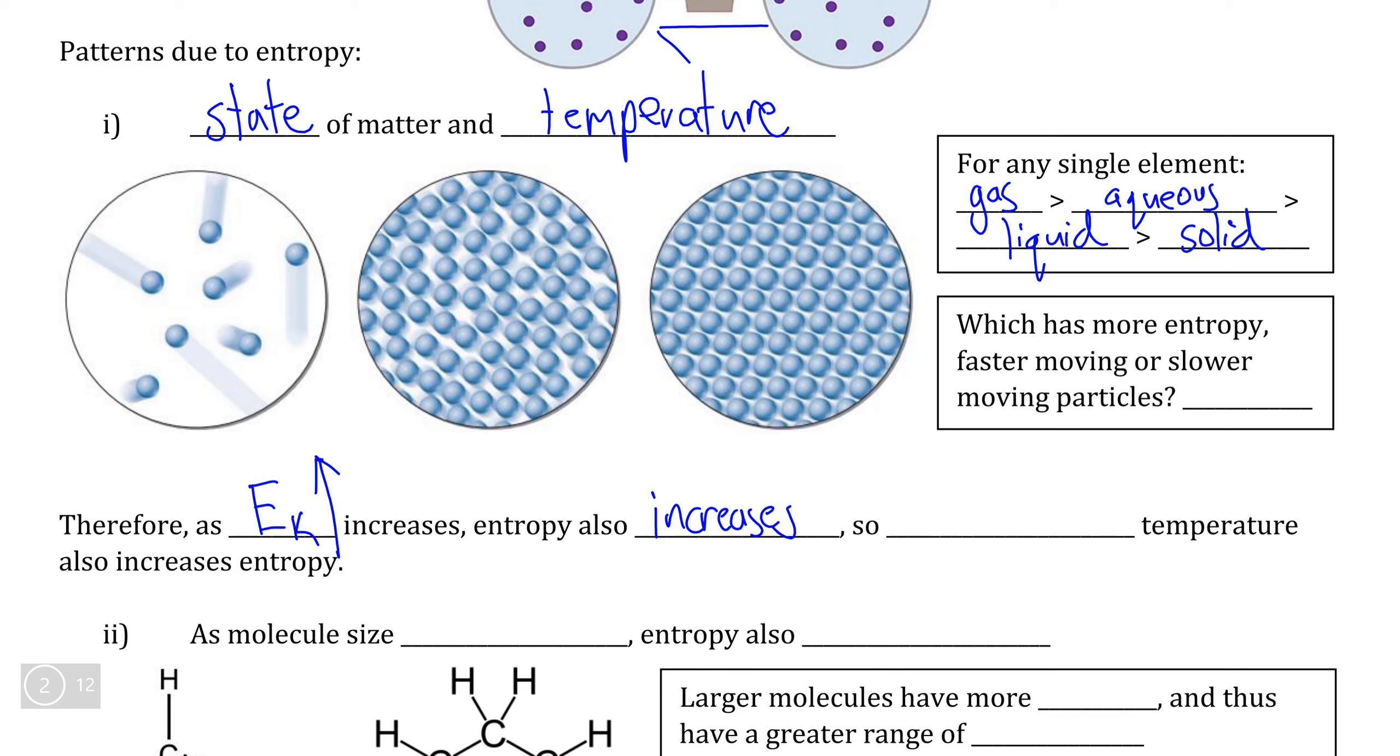Therefore, if we want to increase kinetic energy by increasing the temperature, an increase in temperature is proportionally going to lead to an increase in entropy because you're increasing the amount of unpredictability of the movement of particles themselves.